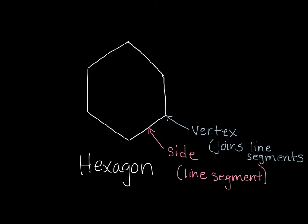Now by convention, we label polygons based on their vertices. So if I were going to label this, I'd say that maybe this was polygon A, B, C, D, E, F.